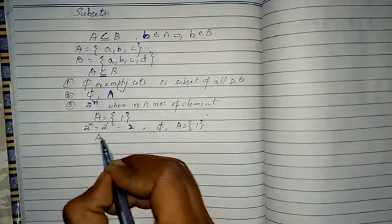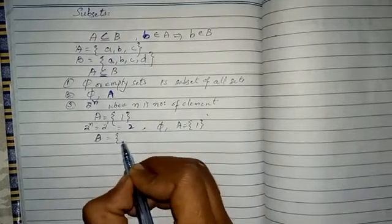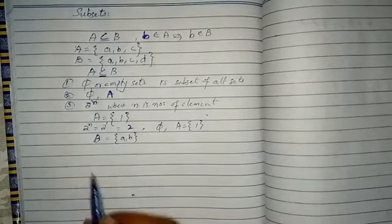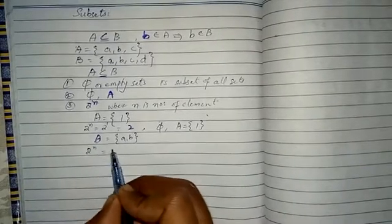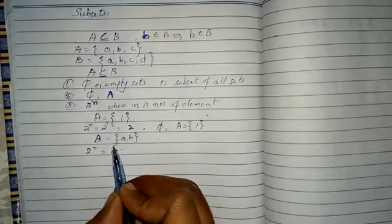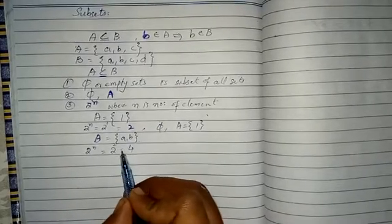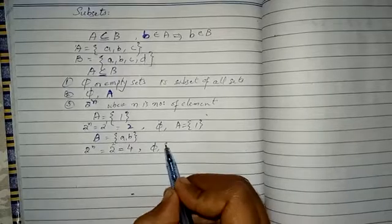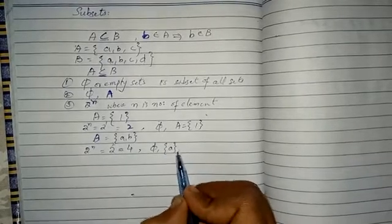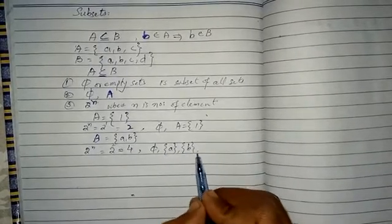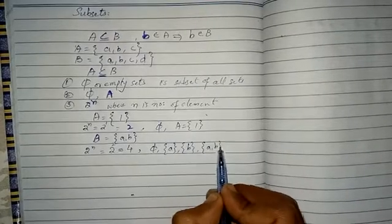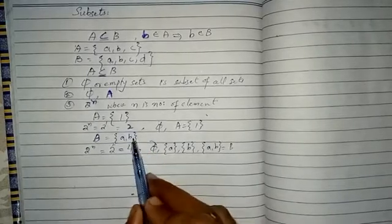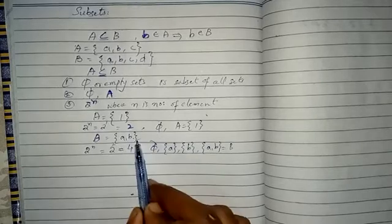Let's take another example. Let set B equal {a, b}, so it has two elements. Applying the formula: 2^n = 2^2 = 4. So set B must have 4 subsets, which are: phi, {a}, {b}, and {a, b} itself. All four of these are subsets of B.